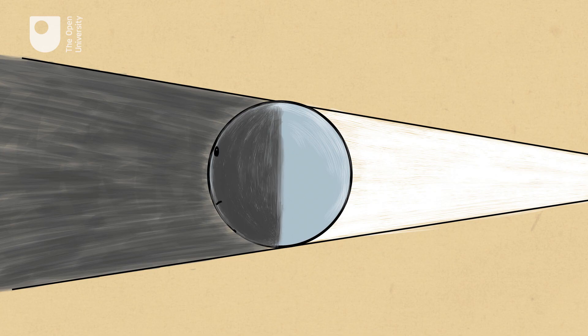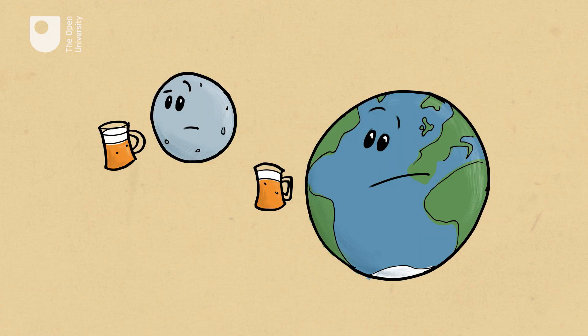There is no permanent dark side in terms of sunlight, but there is one side that is permanently turned away from the Earth so that we can never see it.